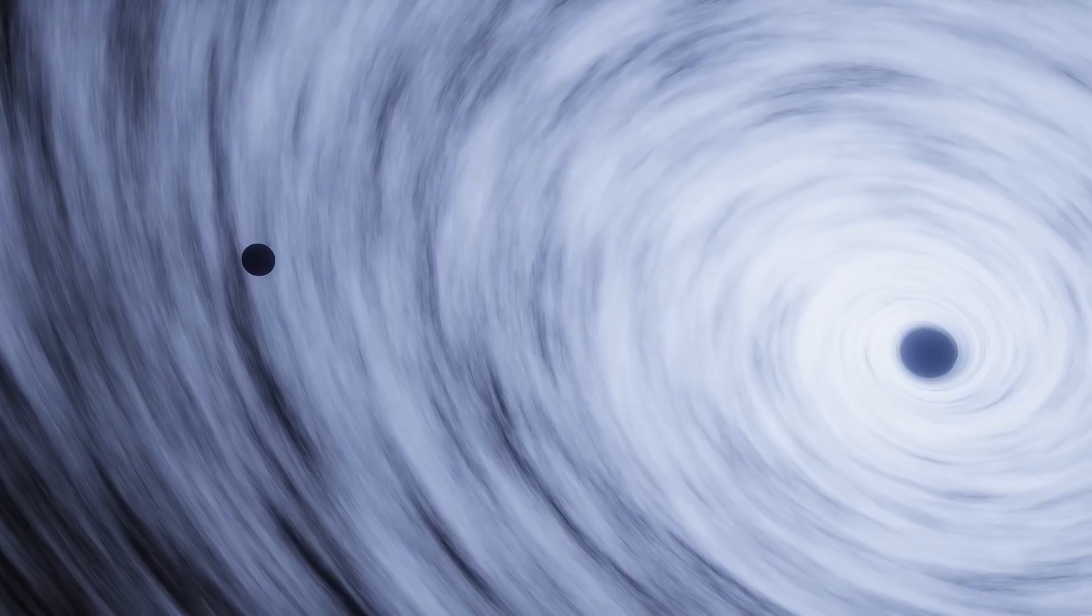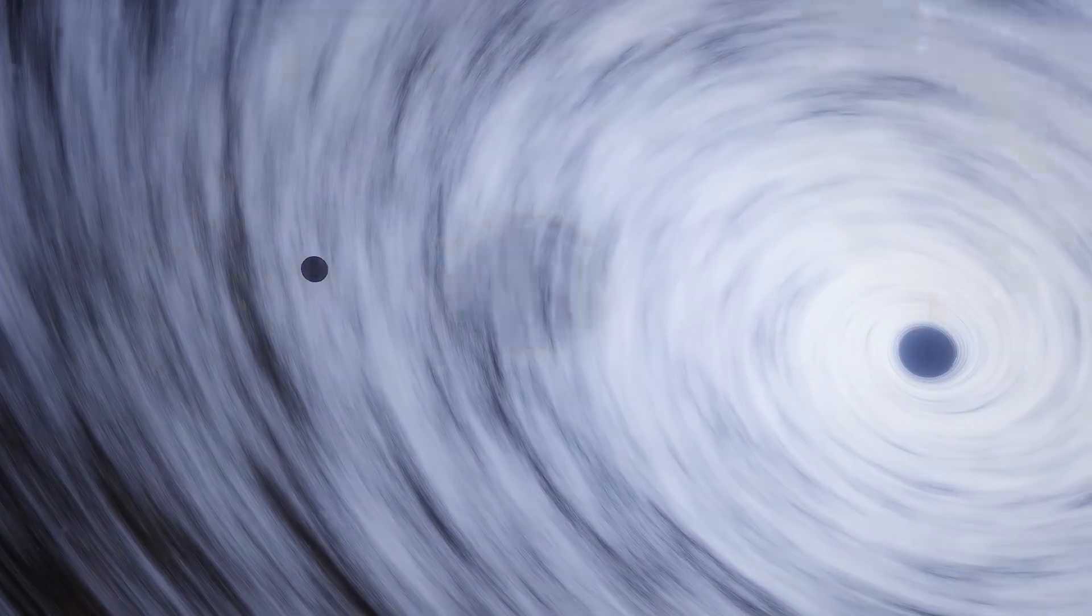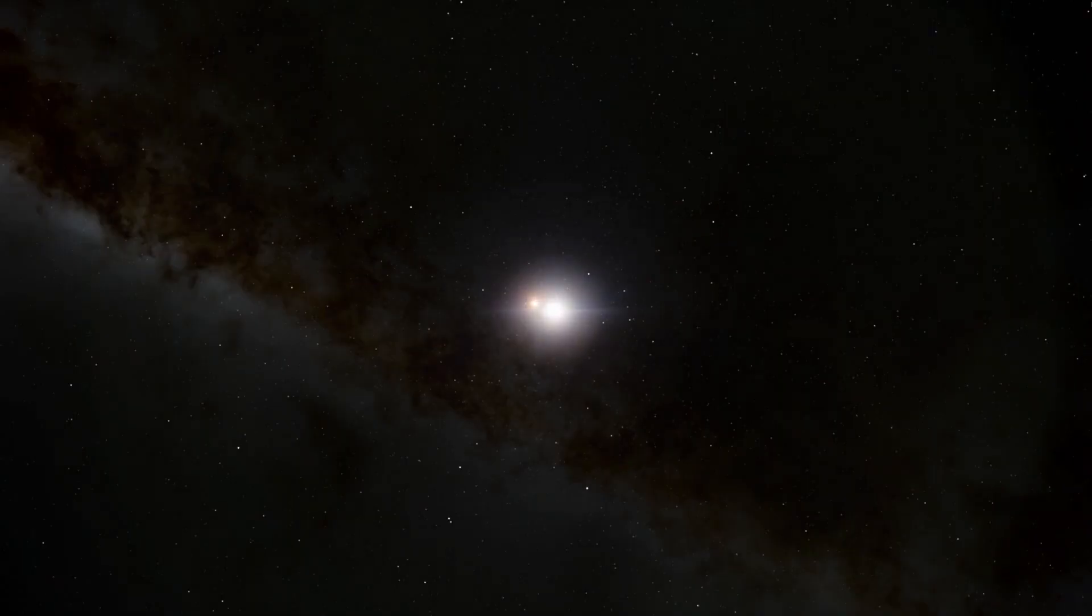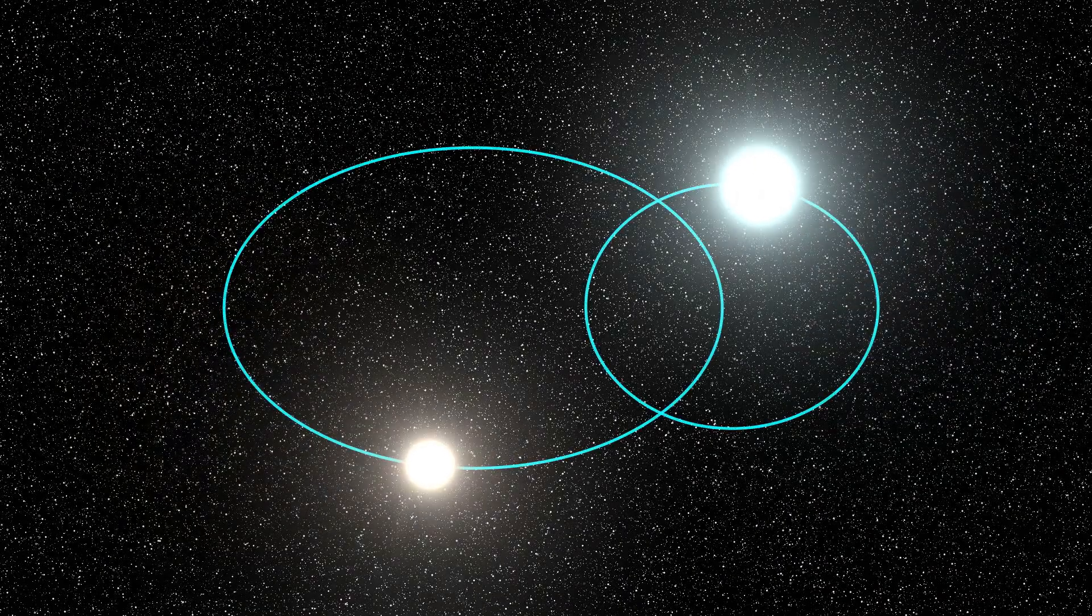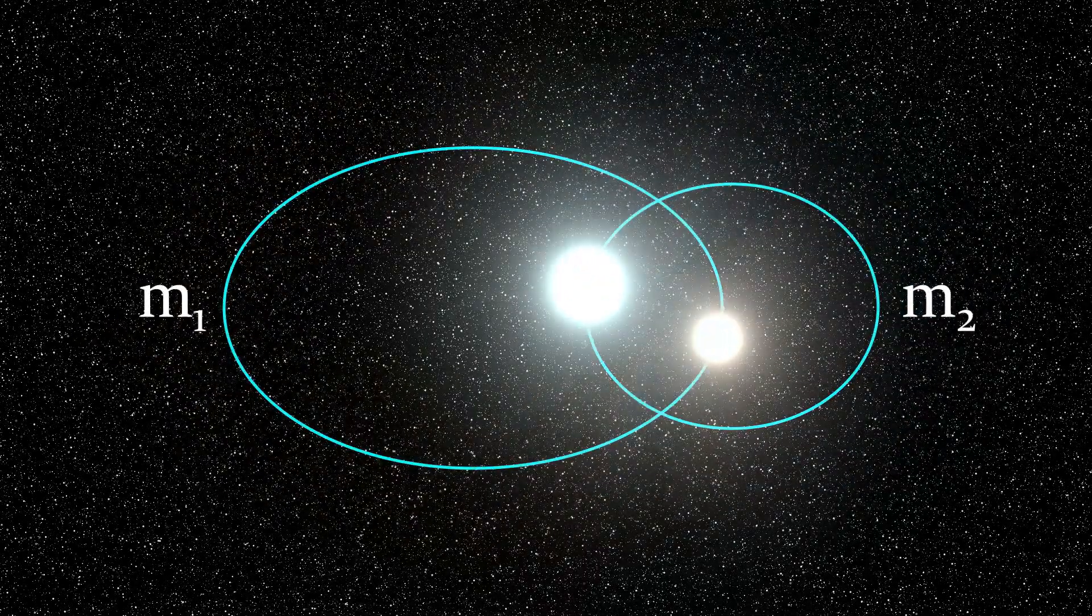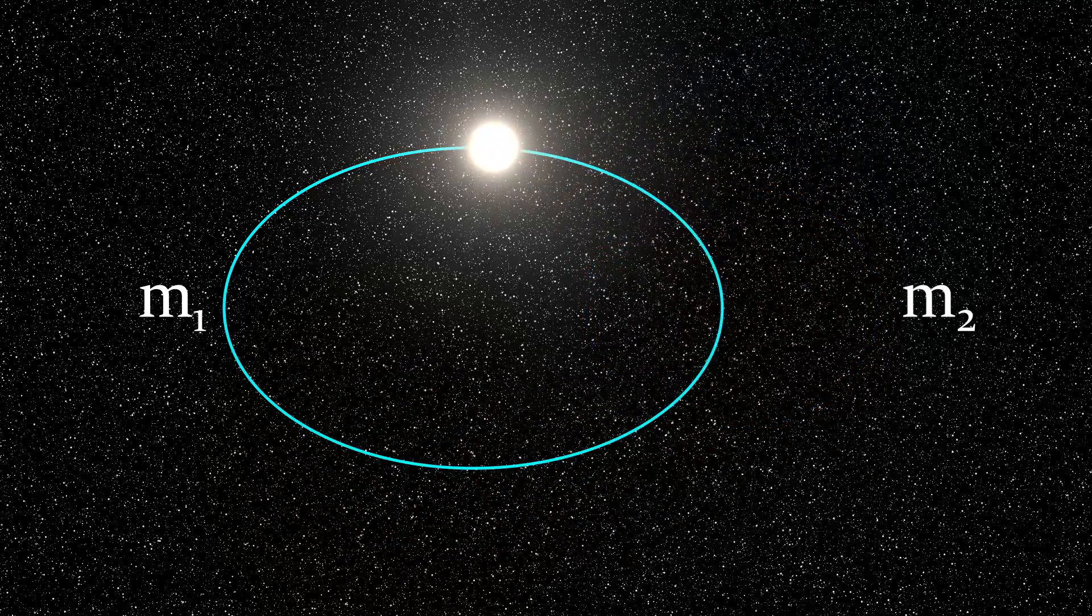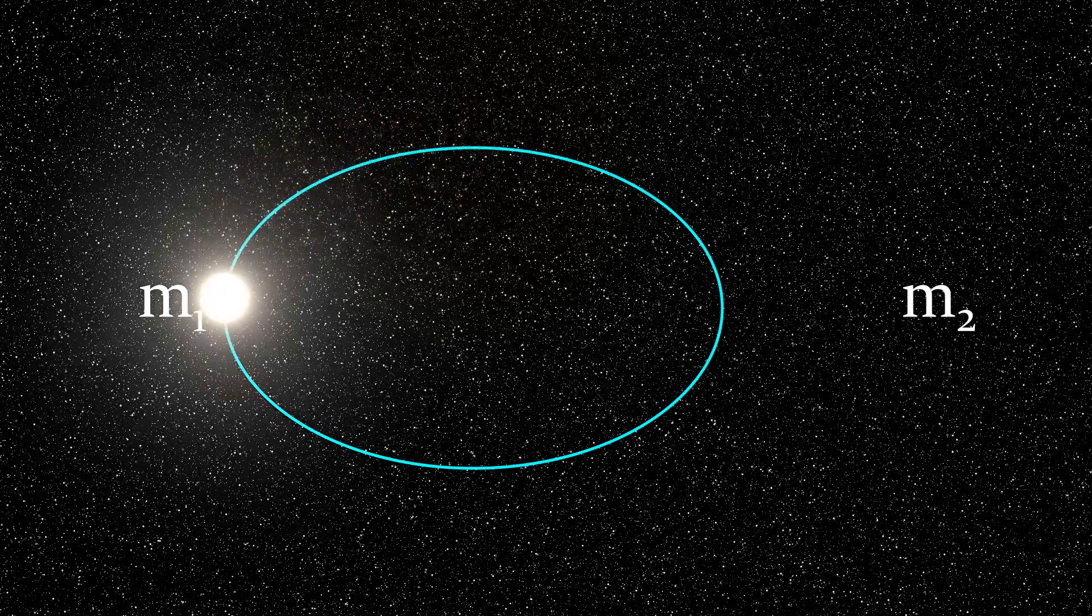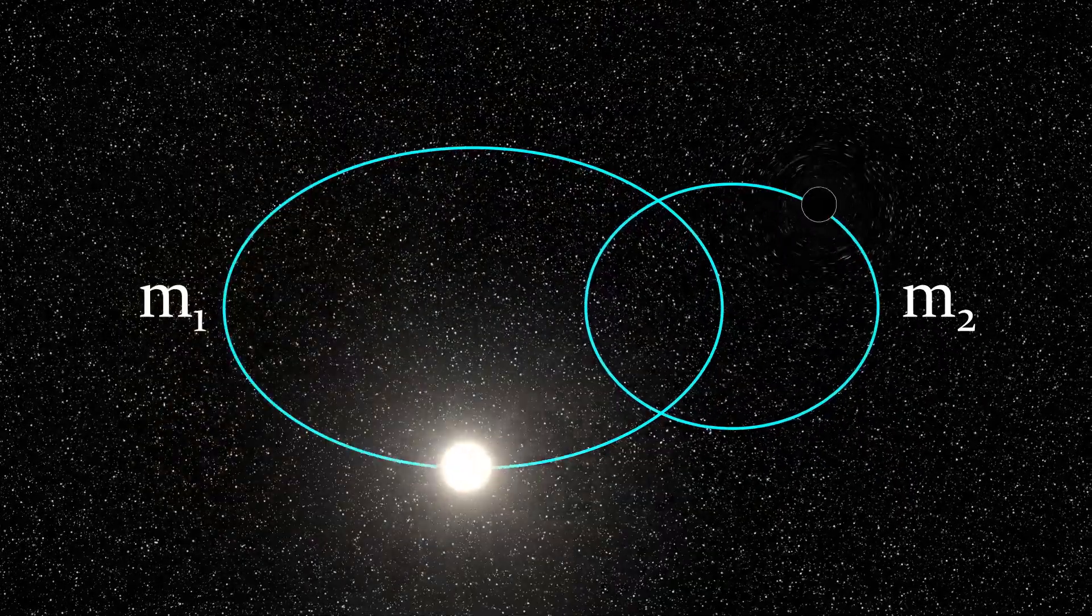Not all black holes form bright accretion disks. Some are observed through their gravitational interactions with already visible objects, like other stars in binary systems. In such systems, stars orbit a common center of mass, and by studying their motion, we can determine the masses involved. Occasionally, we find stars behaving as part of a binary system with an unseen companion. If calculations show the invisible object has a mass exceeding three solar masses, it can only be a black hole.